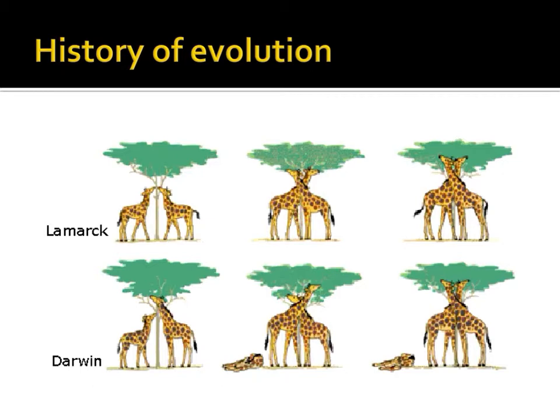Charles Darwin's idea is exhibited on the bottom set of giraffes. Some giraffes in nature are shorter, some are taller. If the short ones can't reach leaves in trees, their primary food source, then they might die — that's what the crumpled blob is supposed to be in the middle picture. Charles Darwin's idea was that, over many generations, the taller giraffes would survive and reproduce, and the population as a whole would end up with more tall giraffes and fewer shorter ones.